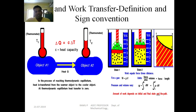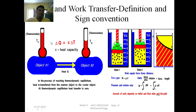Heat transfer occurs when there is a temperature difference between two systems — heat flows from a higher temperature body (T1) to a lower temperature body (T2). Work transfer occurs when a force is applied to a piston causing displacement. The unit is force times distance. In a thermodynamic process, work done is expressed as P·dV — where pressure acts as the force and change in volume (dV) acts as the displacement. Therefore, PDV is the work for any process.